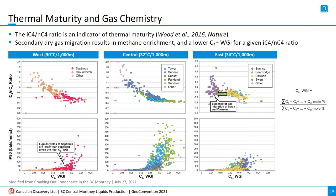This explains why liquids yields at Dawson were low, despite the wells being in favourable pressure and temperature ranges for liquids production. In the bottom row of graphs, we see that Tower and Parkland have the highest C2-plus wet gas index. At Septimus, liquids yields are relatively low until the wet gas index increases above 0.2.